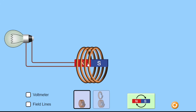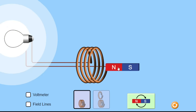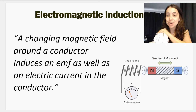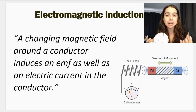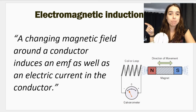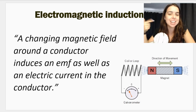Either I need to pull the magnet out or push the magnet in. As long as there's movement, there will be an induced EMF and therefore an induced current. So this is how we explain electromagnetic induction: a changing magnetic field — and the magnetic field must be changing — around a conductor induces, which means creates or produces, an EMF and then an electrical current.